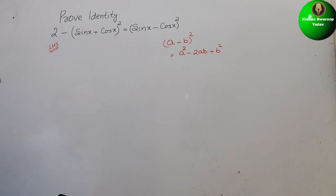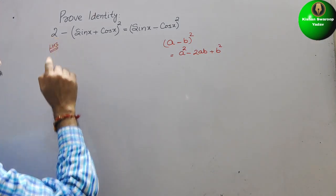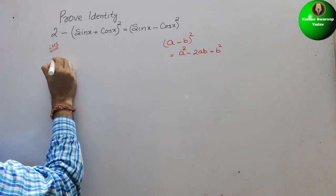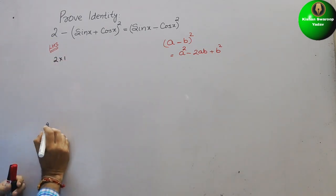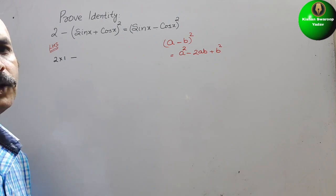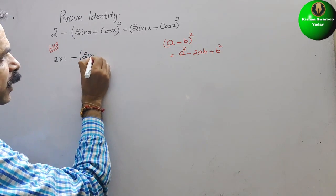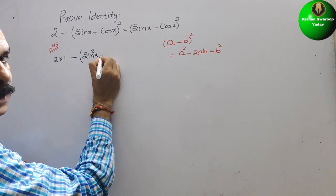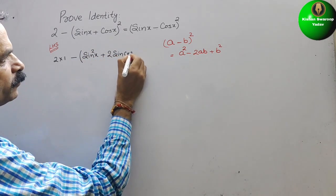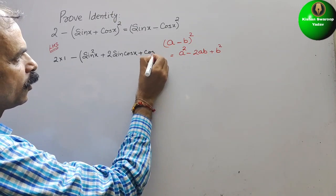Now, first we will expand the LHS. You can see here 2 is there first. The 2 means 2 into 1, and then we solve (sin x + cos x) as a plus b whole square. So that gives a square, which is sin square x, plus 2ab which is 2 sin x cos x, and b square which is cos square x.